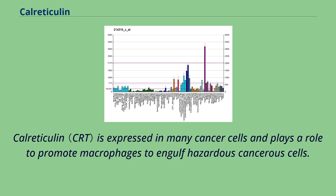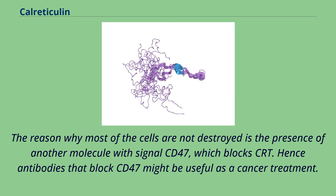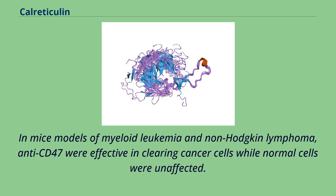Calreticulin is expressed in many cancer cells and plays a role in promoting macrophages to engulf hazardous cancerous cells. The reason why most of the cells are not destroyed is the presence of another molecule with signal CD47, which blocks calreticulin. Hence, antibodies that block CD47 might be useful as a cancer treatment. In mice models of myeloid leukemia and non-Hodgkin lymphoma, anti-CD47 antibodies were effective in clearing cancer cells while normal cells were unaffected.